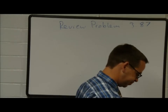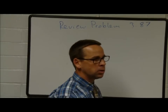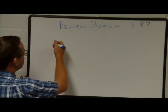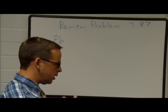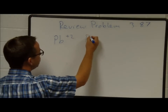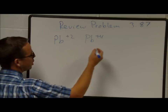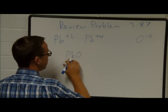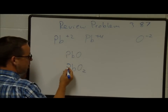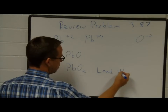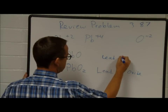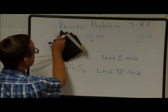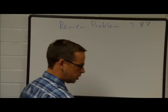Problem 387: Looking at compounds between lead, tin, manganese, iron, and copper with oxygen. Lead can form Pb²⁺ or Pb⁴⁺ ions. Since oxygen always forms O²⁻, combining Pb²⁺ with oxygen gives PbO (lead 2 oxide), and Pb⁴⁺ with oxygen gives PbO₂ (lead 4 oxide). Those are the two compounds that can form between lead and oxygen.